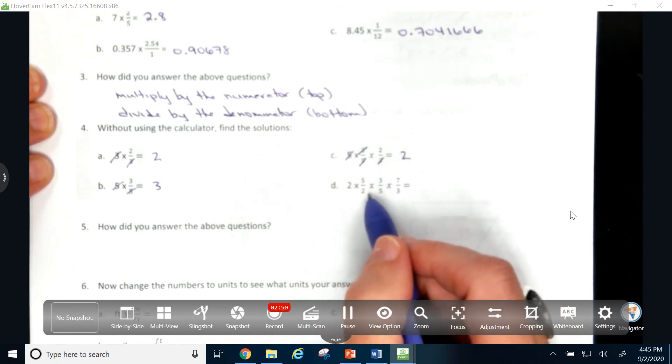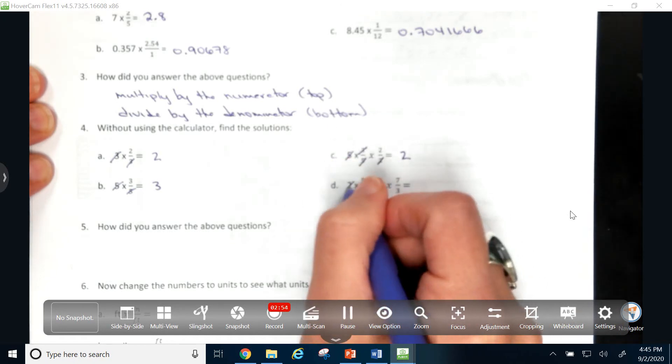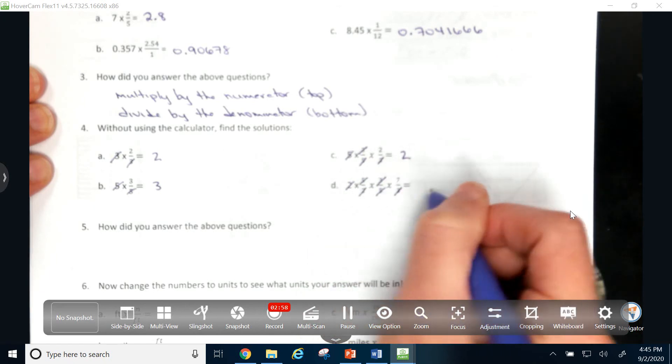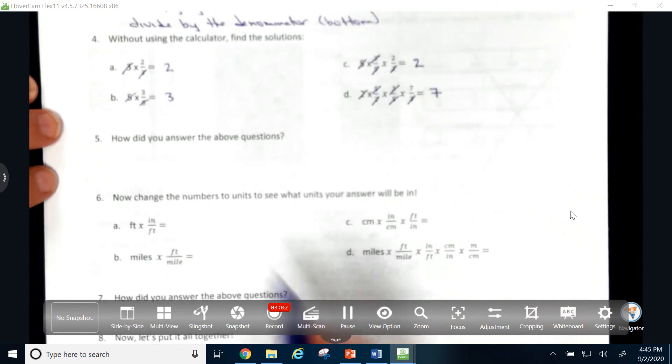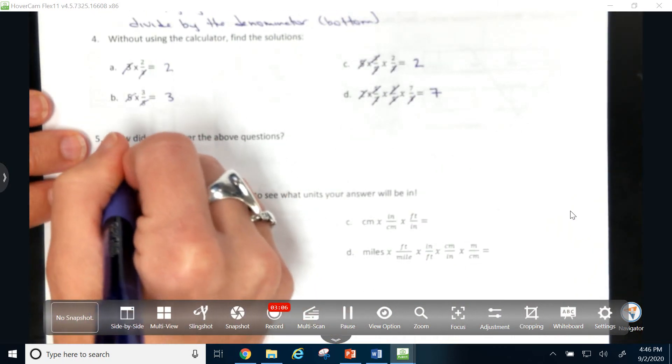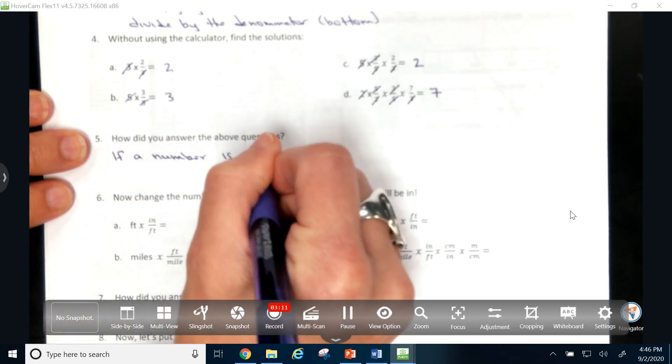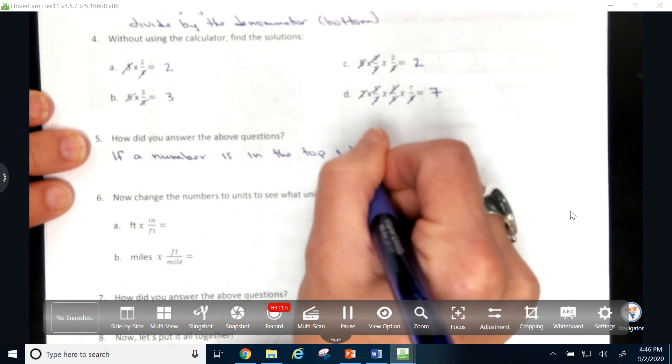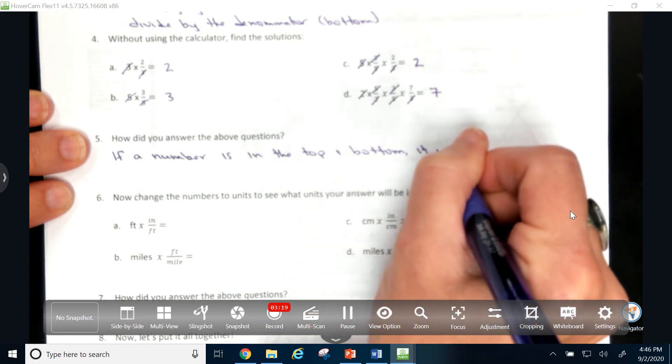And then, letter D, 2 times 5 halves, times 3 fifths, times 7 thirds, I know that the 2s are going to cancel, the 5s are going to cancel, the 3s are going to cancel, and I'm left with 7. So how did I answer the questions above? Well, I know that if a number appears in the top and the bottom, it will cancel out.